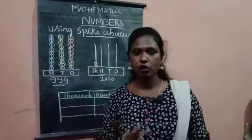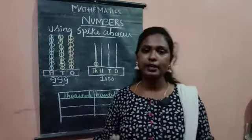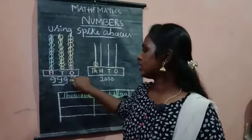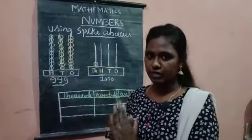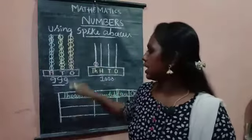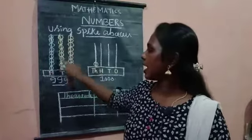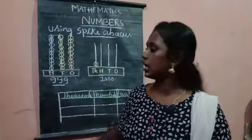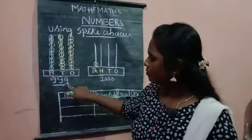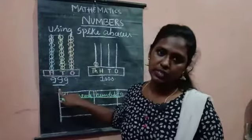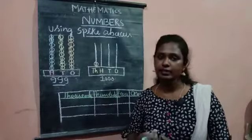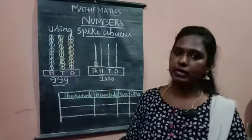So, in all the 3 columns, I have 9, 9 beats. So, it is in the O means 1 place. So, that is 1st place. 1st place, we have 9 beats. Again in the 10th place, we have 9 beats. Again in the 100th place, we have 9 beats. So, I have written in the numbers here. So, here we are representing 999 beats in a spike abacus.